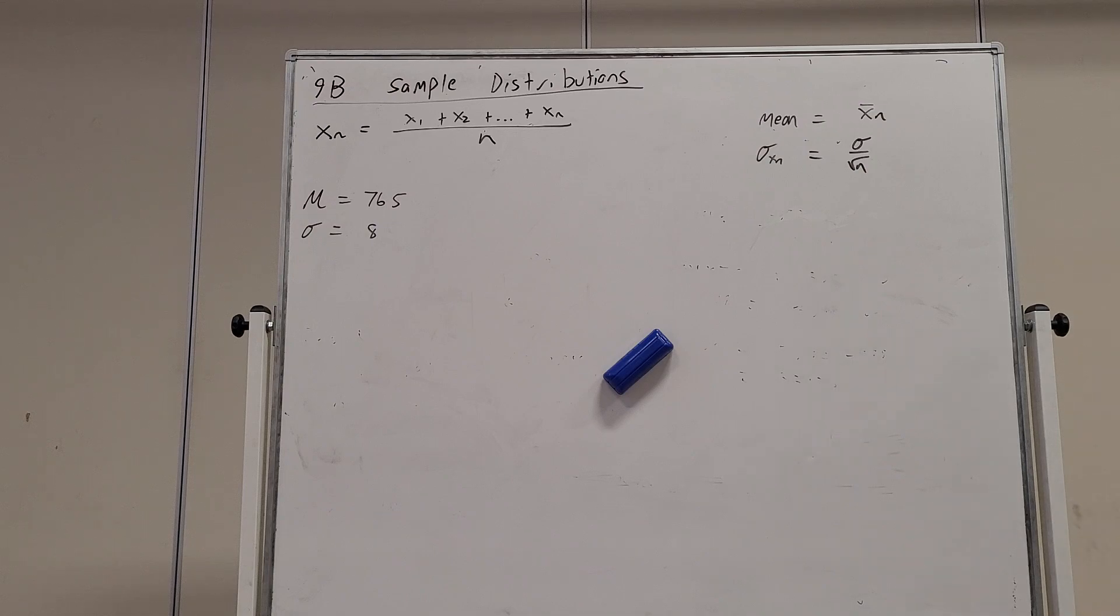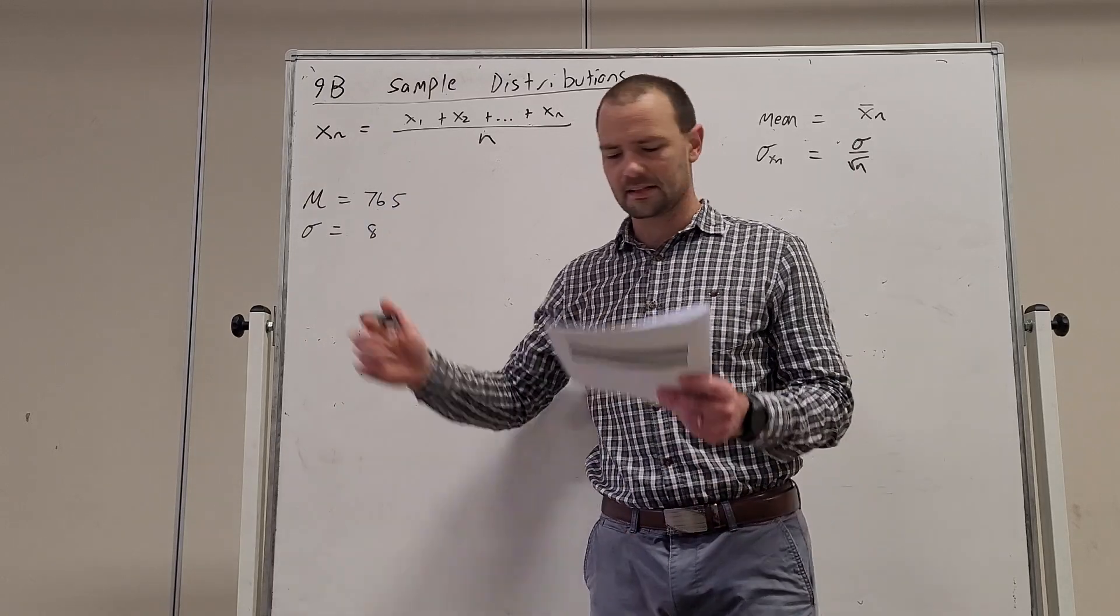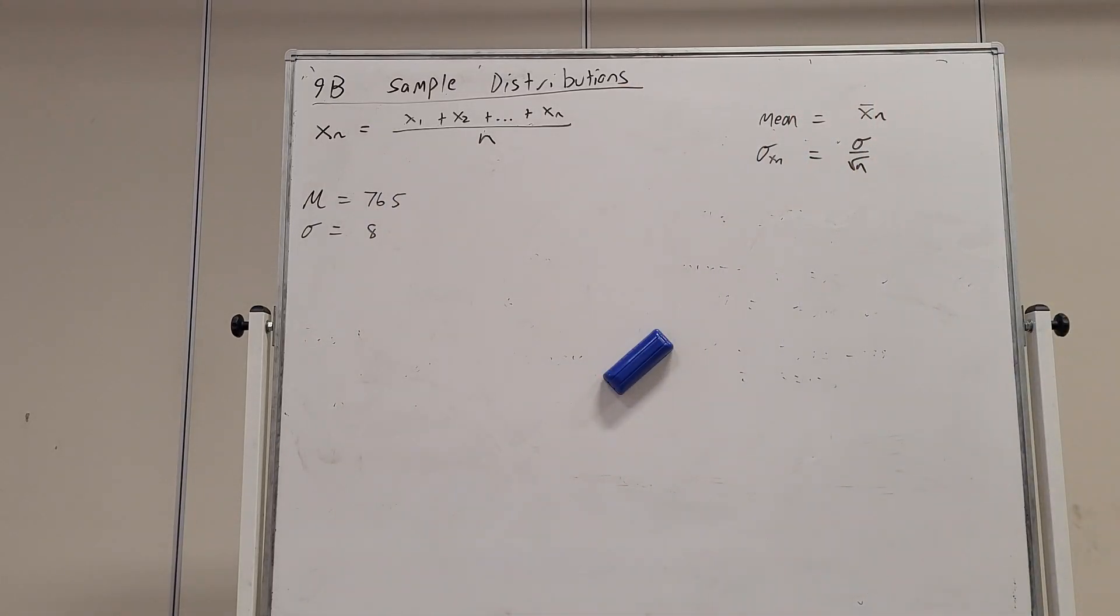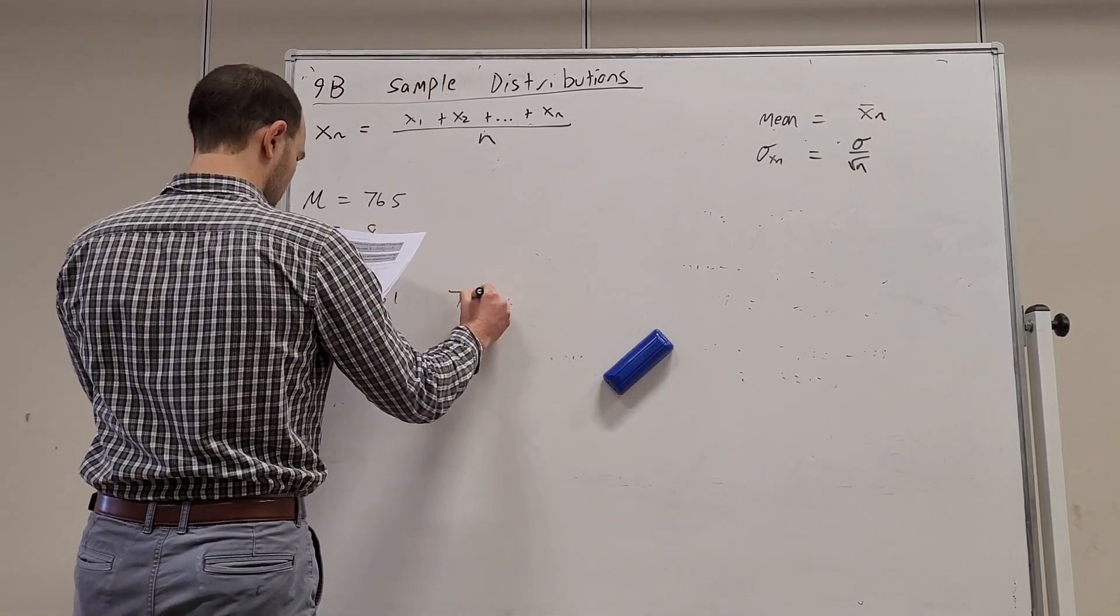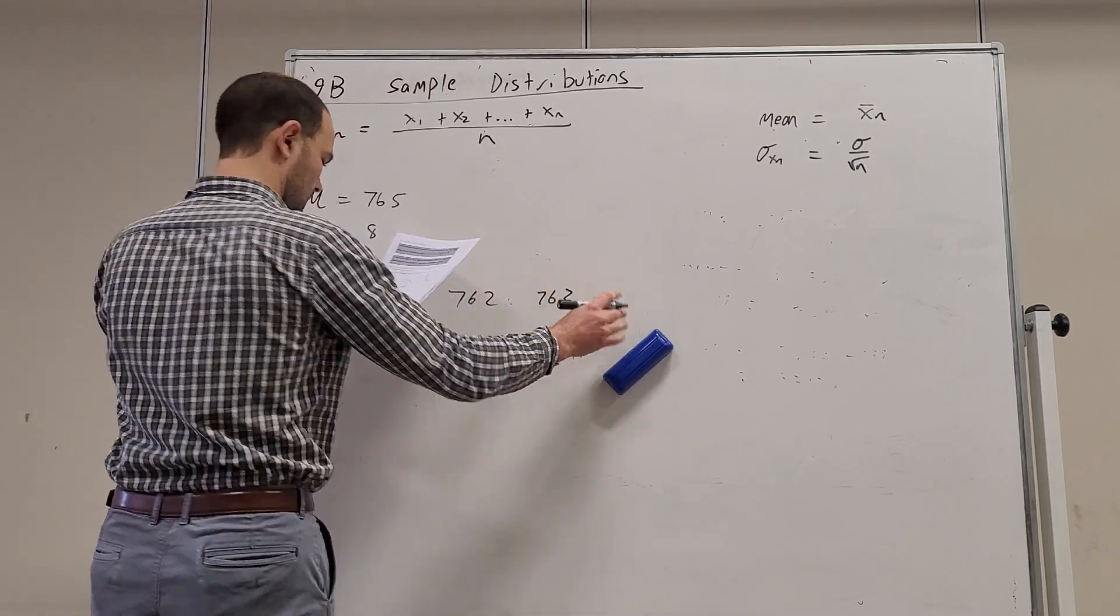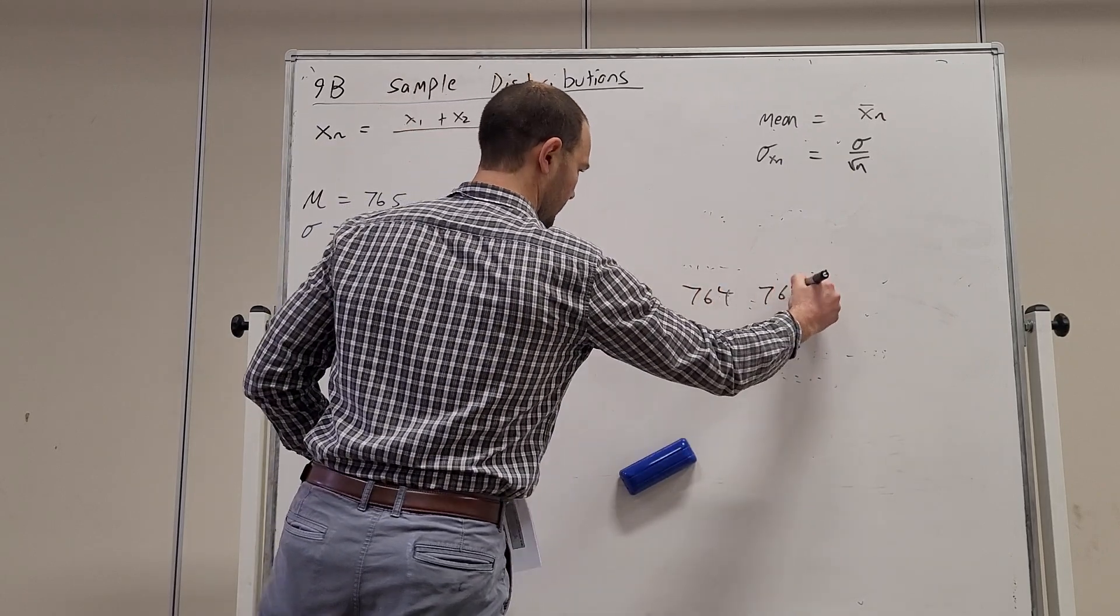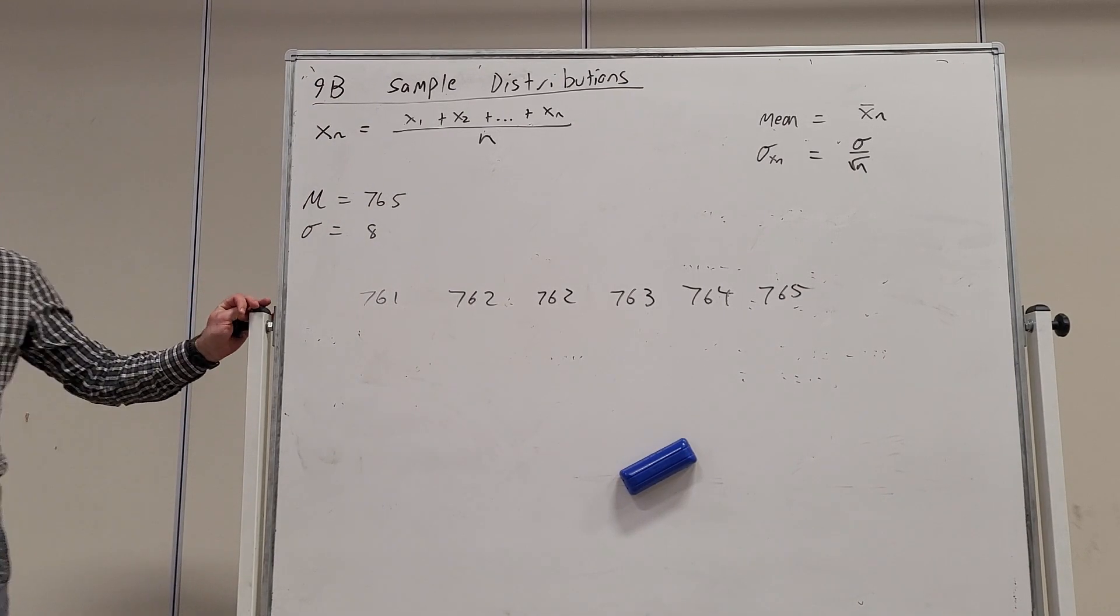Here we have bags of peanuts which are normally distributed. They have a mean of 765 grams and a standard deviation of 8 grams. Now we're randomly checking six bags of peanuts measurements. And we found their weights were 761, 762, 762, 763, 764, and 765, respectively. So we weighed six bags and those were the weights.